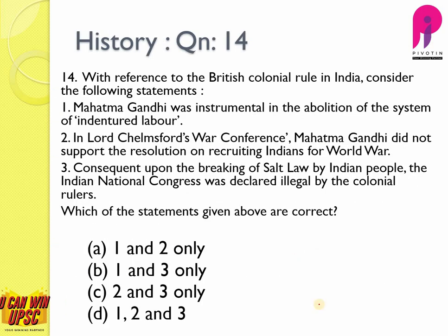Question number fourteen: with reference to British colonial rule in India — Mahatma Gandhi was instrumental in the abolition of the system of indentured labour — this is correct, though it was in South Africa. In the Lord's War Conference, Mahatma Gandhi did not support the resolution on recruiting Indians for World War — this is wrong; in 1918 Gandhi explicitly mentioned his support for recruiting Indians for the war. Consequent upon the breaking of the Salt Law, the Indian National Congress was declared illegal — this is correct. The answer is B — one and three.